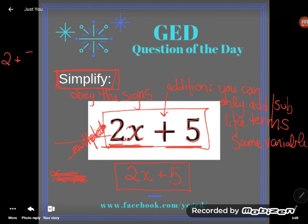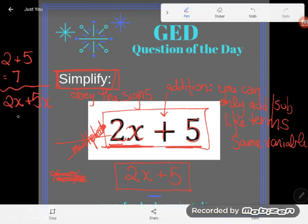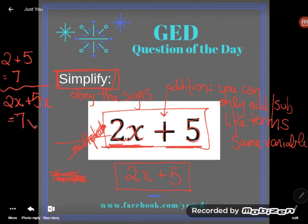If they were both plain old regular numbers, 2 and 5, of course I could add them. I know what that comes to, 7. If they were both x terms, like 2x's plus 5x's, well, if I have 2x's over there and 5x's over there, I know how many x's I have. I have 7x's.